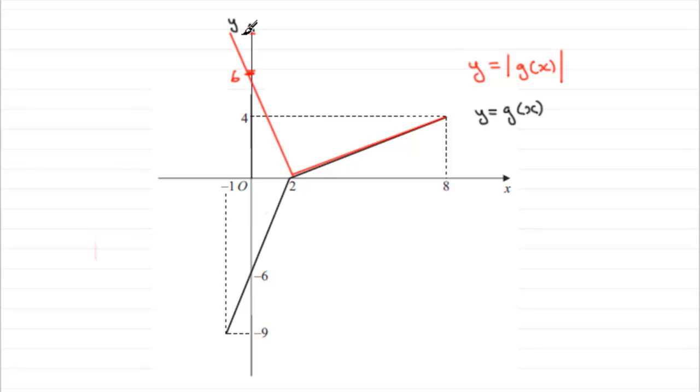Well worth marking that value of 9 in. But they wanted to know where the graph of y equals the mod of g of x intersects the axis, so you can see at (2,0) and at (0,6).